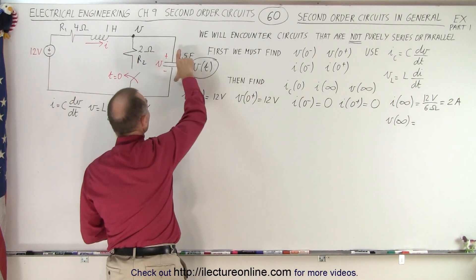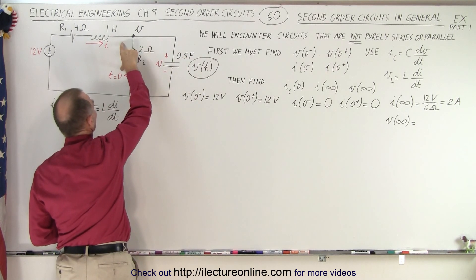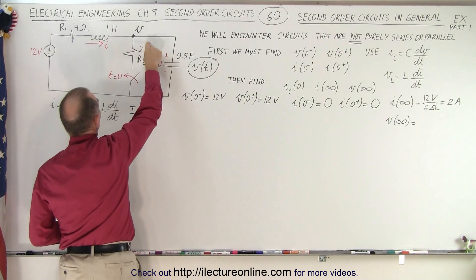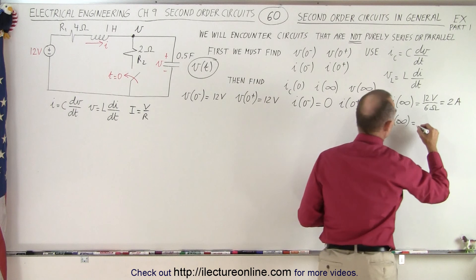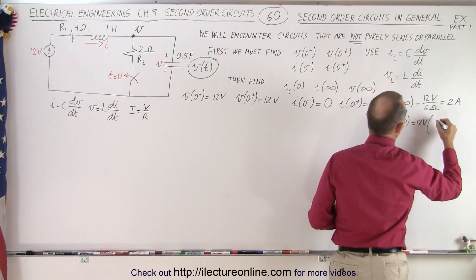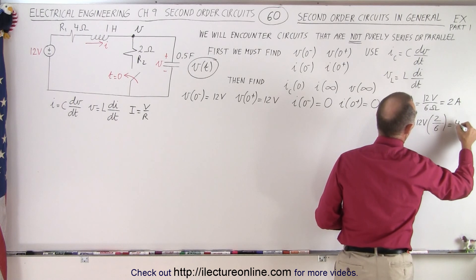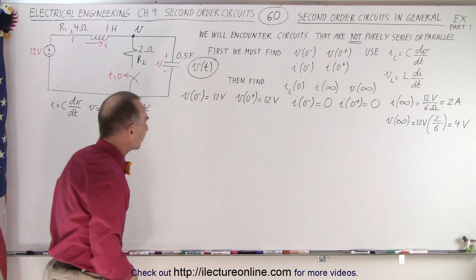And the steady state voltage here, notice that the voltage here will be the same as the voltage across this resistor, and that would be one-third the total voltage, because I have 2 ohms here and 4 ohms there. So that means we have 12 volts times 2 over 6, which is 4 volts. 4 volts will be the voltage across the capacitor.